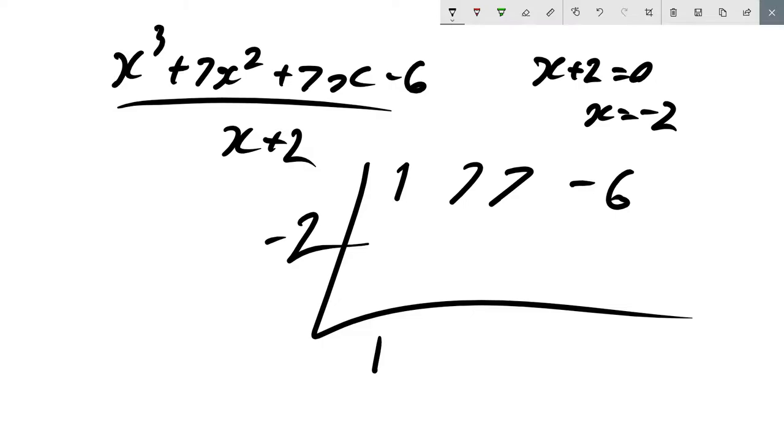And then we're going to actually start the process. We're going to times minus 2 and 1 together, so when we do that we get minus 2. And then we're going to add - we're not subtracting, we're going to add. So 7 plus minus 2 is 5. Then we're going to rinse and repeat. Now minus 2 times 5 is minus 10, add them to get minus 3, times them to get 6, add to get 0. And that's it, that's the whole process.